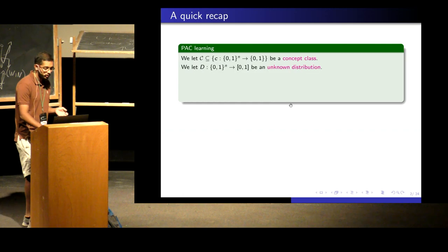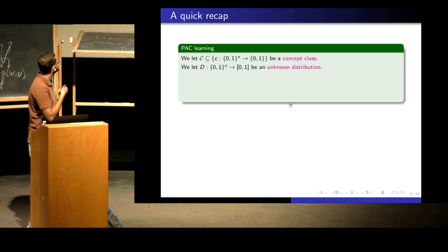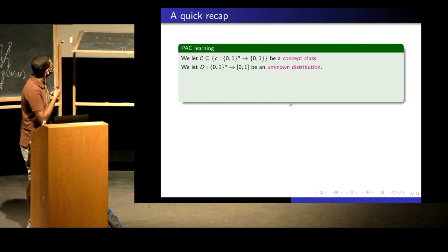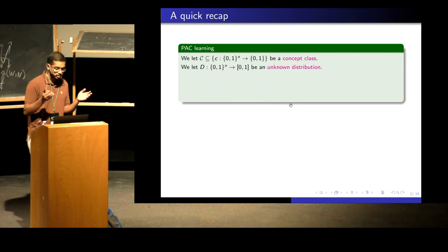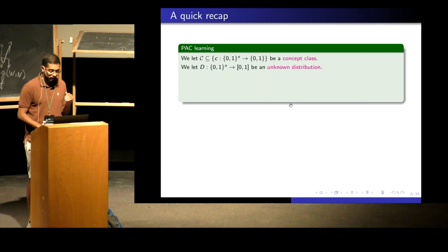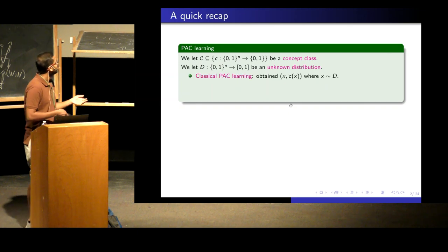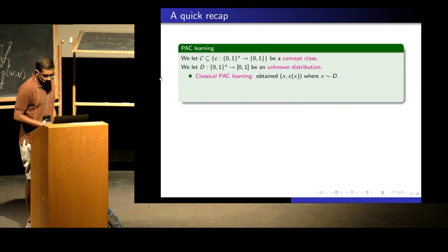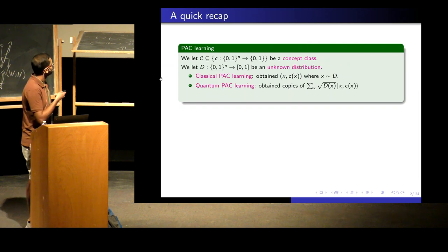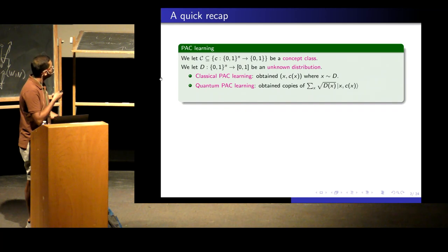Yesterday we saw the PAC learning model. There is a concept class — a collection of Boolean functions — and a distribution D on n-bit strings. The concept class is known to everybody; the distribution is unknown. In classical PAC learning, you get x comma c(x), an n-plus-one bit string where x is sampled from D. In quantum PAC learning, you get this coherent superposition of x comma c(x), where the amplitudes are square root of D(x).